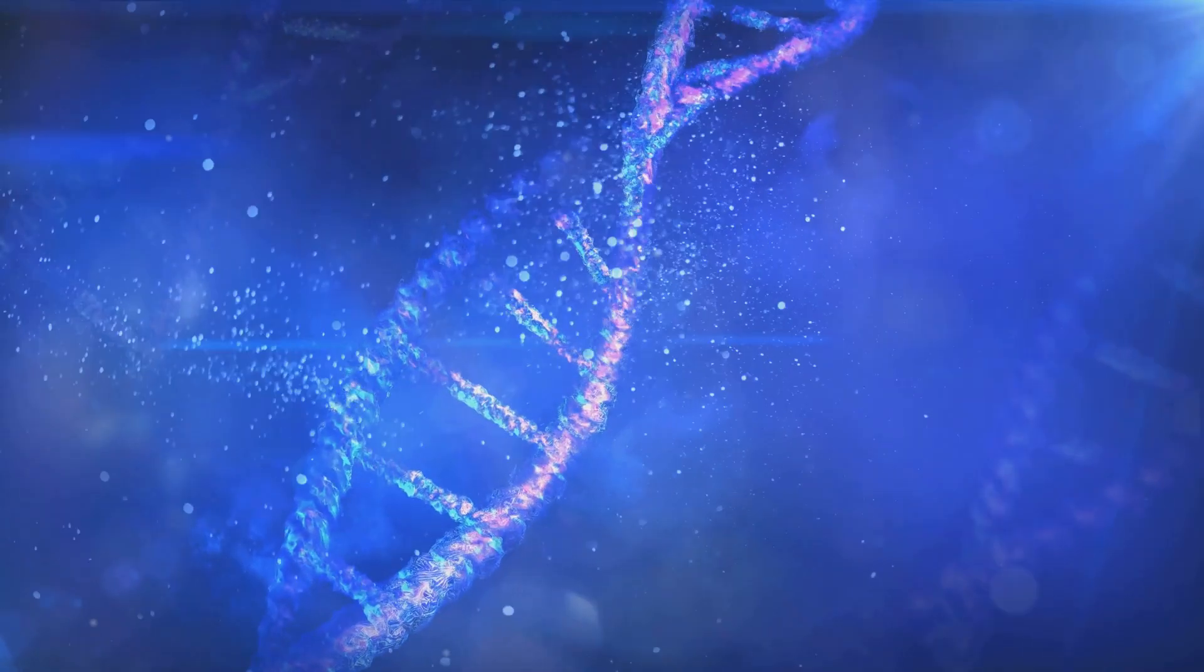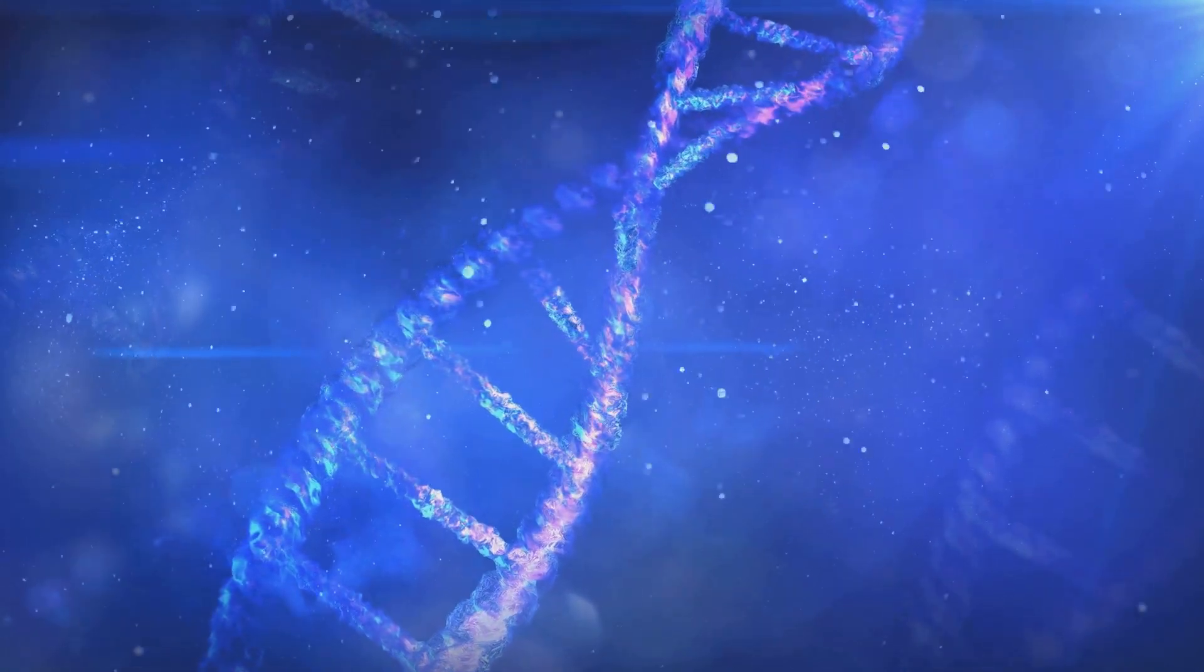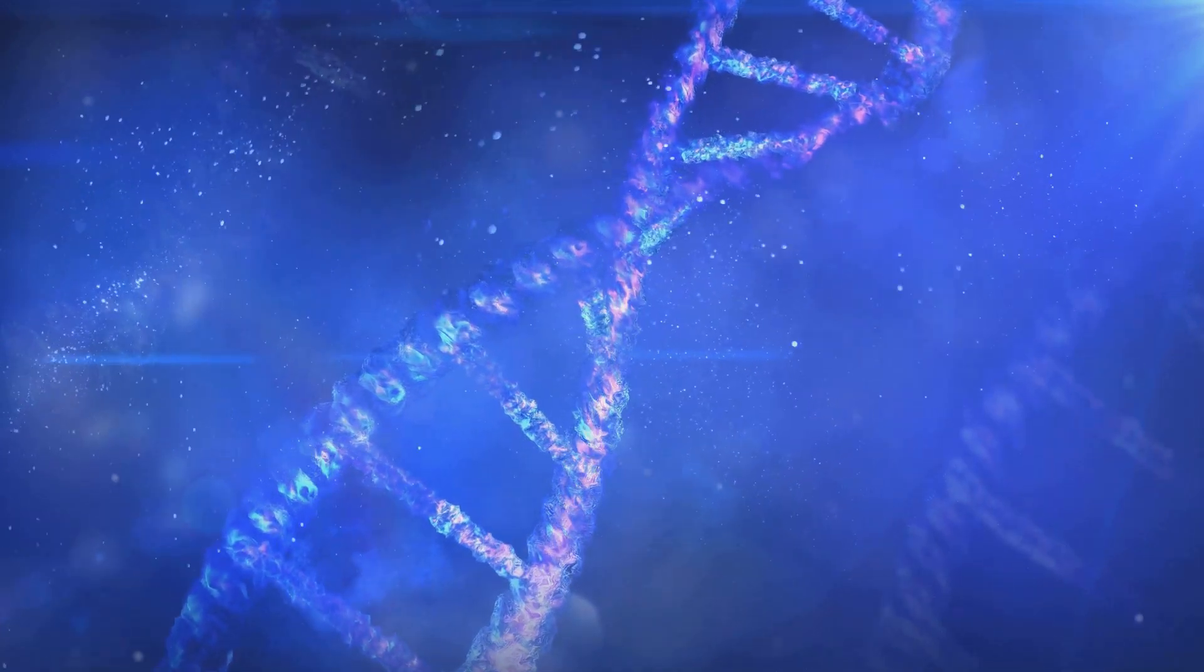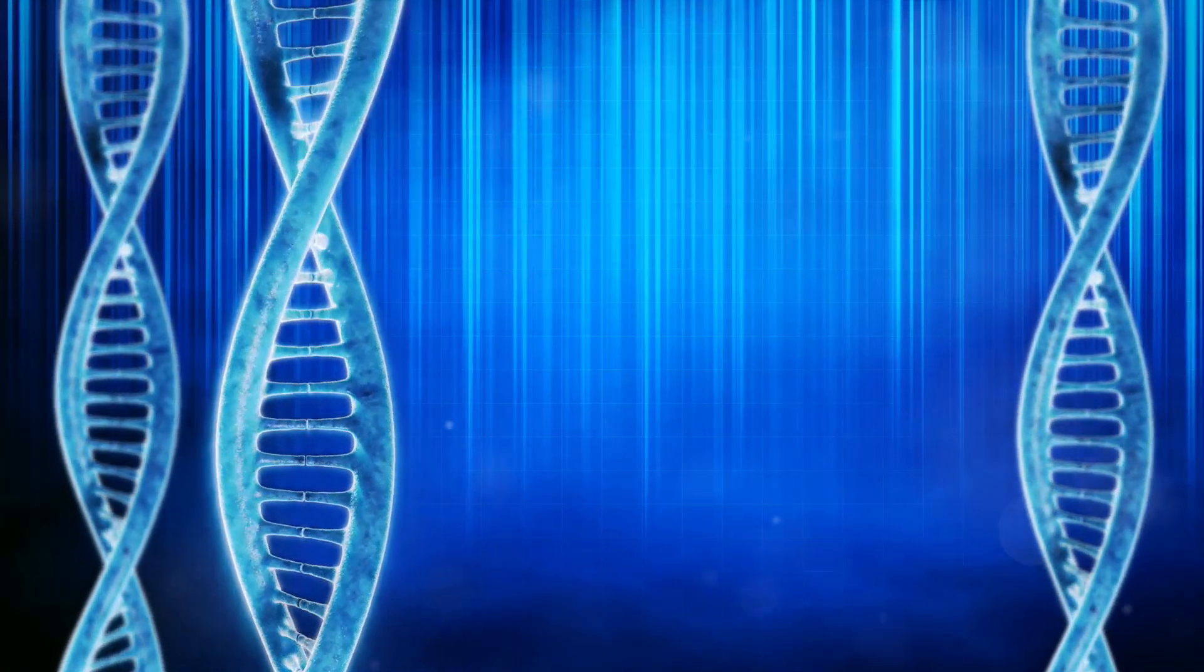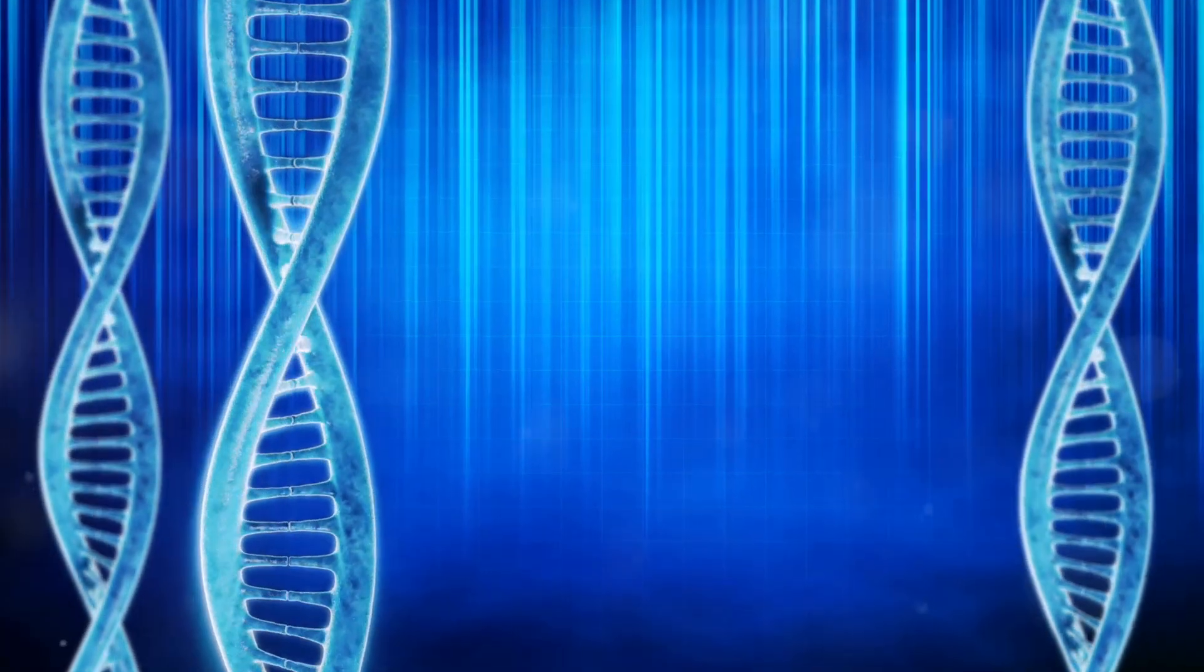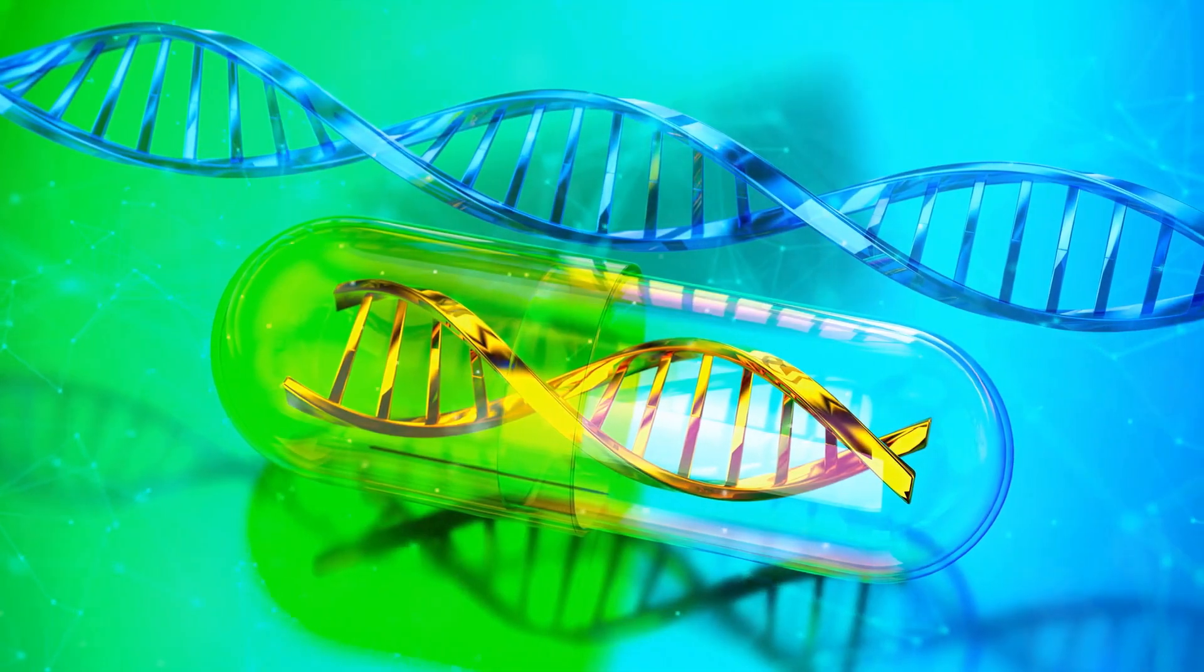Lastly, we have non-homologous end-joining, or NHEJ. This pathway also repairs double-strand breaks, but unlike HR, it doesn't require a homologous template. It is a quicker, albeit less accurate, repair mechanism that operates throughout the cell cycle.